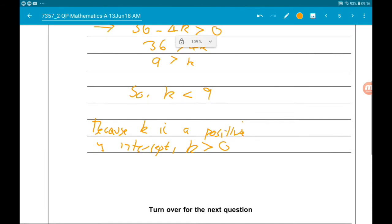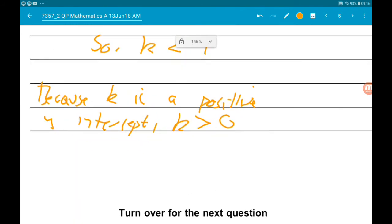So our full answer is that k is greater than 0 but less than 9. Cool.